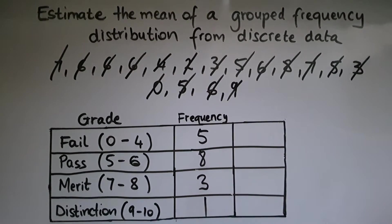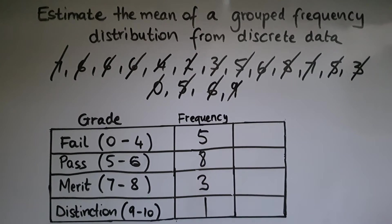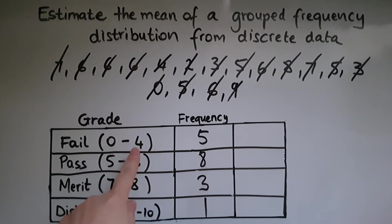So normally when you work out the mean, you'd have specific values. So in this case, between 0 and 4, it's a range of values. We have 0, 1, 2, 3, and 4.